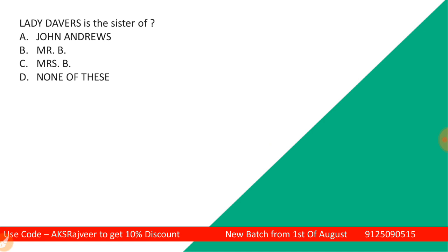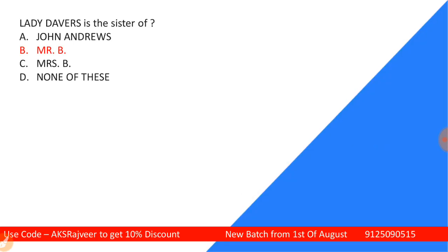Next question: Lady Davers is the sister of — options are John and Tews, Mr. B, Mrs. B, or none of these. The correct answer is Mr. B. Lady Davers is the sister of Mr. B. After marriage, Lady B got the name Lady Davers.